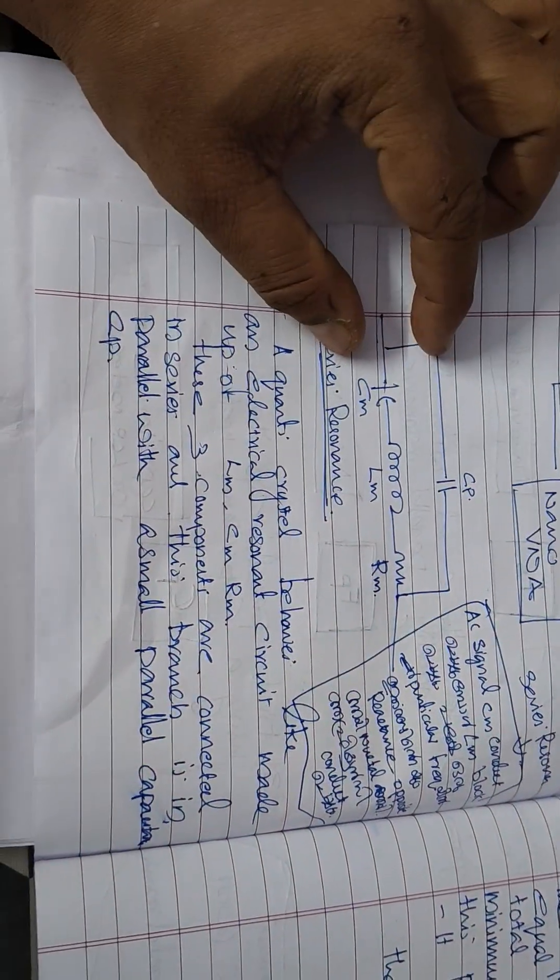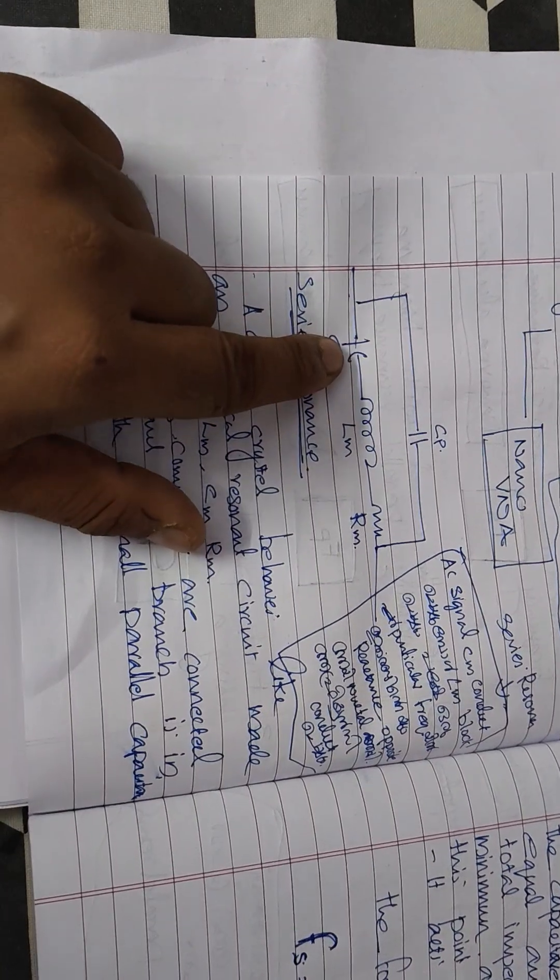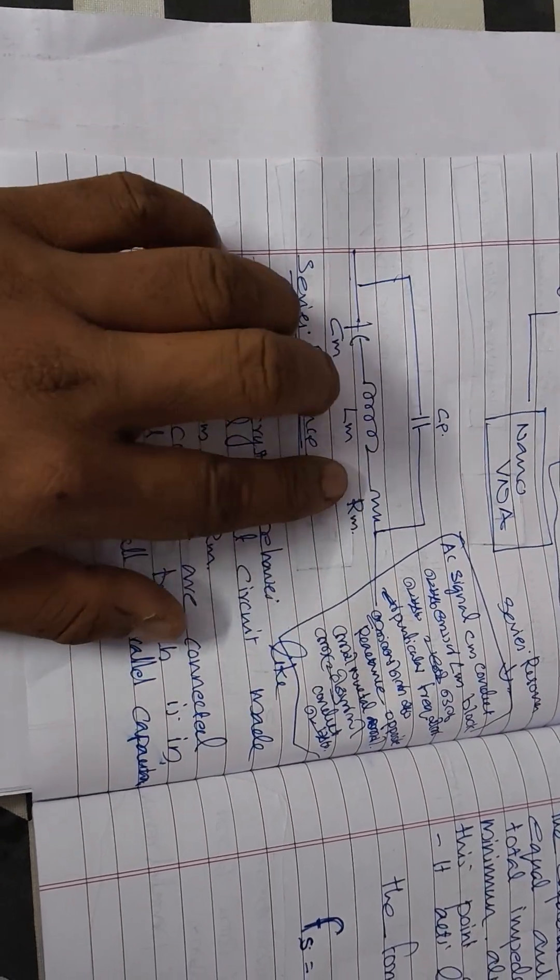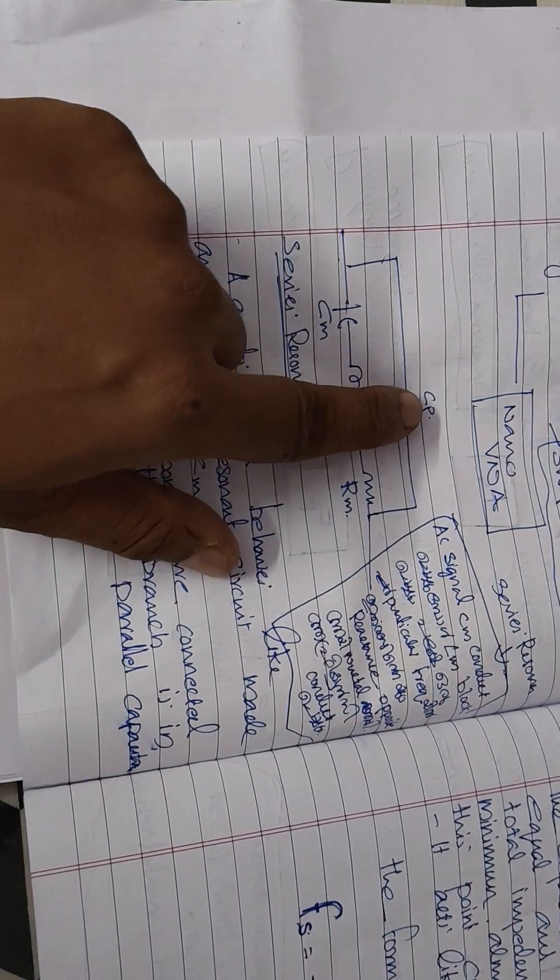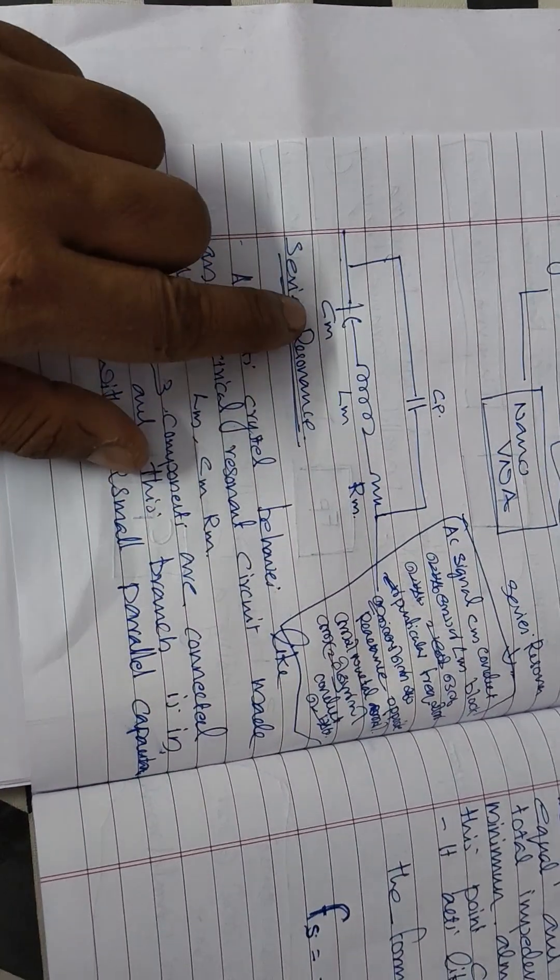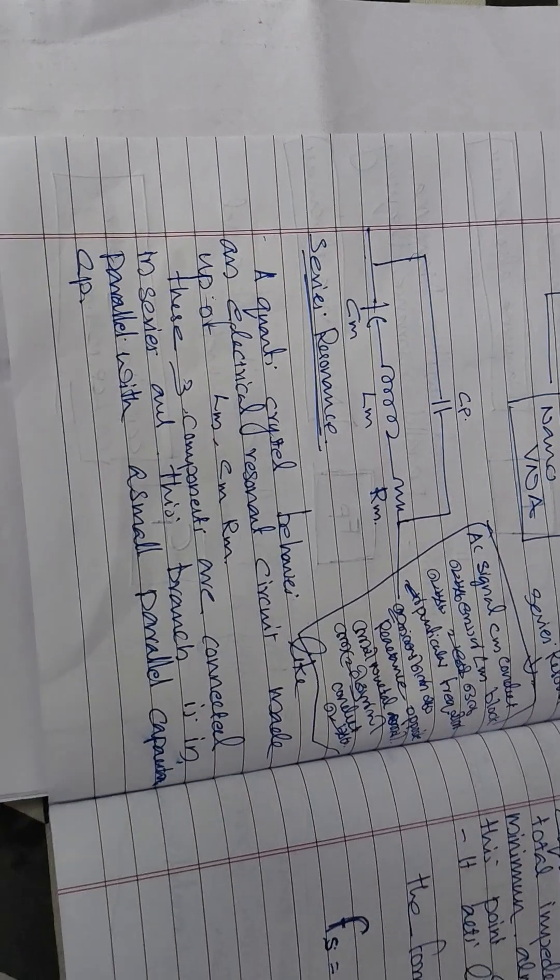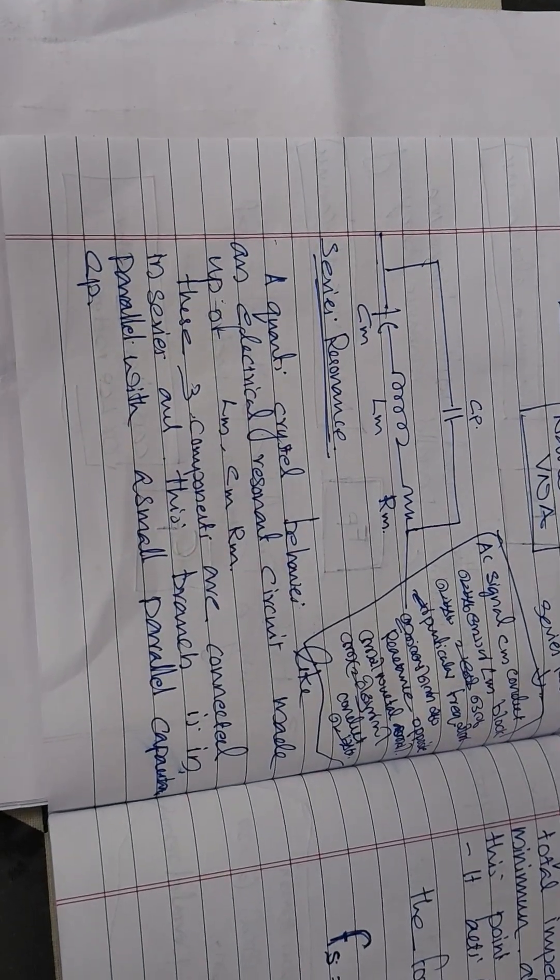This is the internal block diagram of a quartz crystal. There is a capacitor, inductance, and resistor in series, and a capacitor in parallel. The parallel capacitor is known as CP, and the CM, LM, and RM are the three components in series.